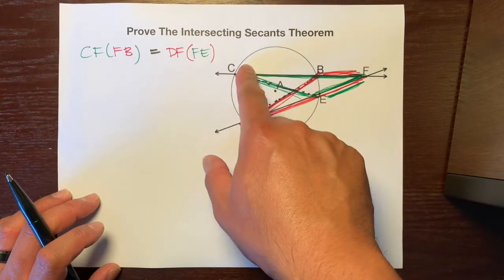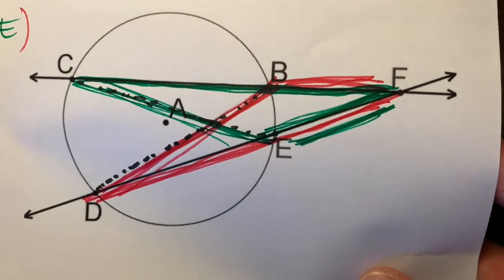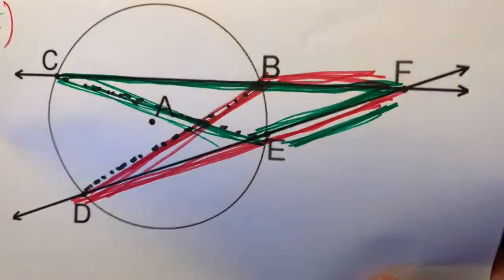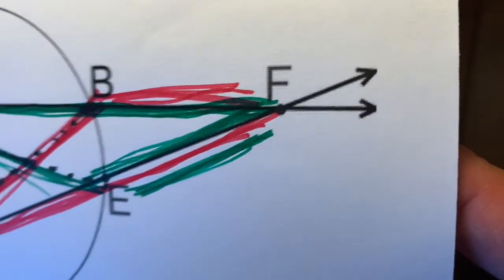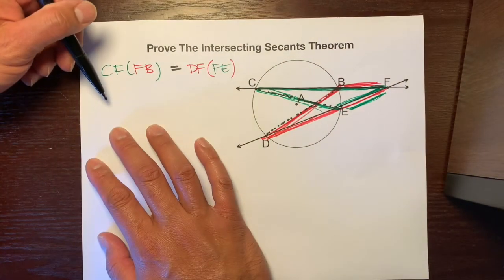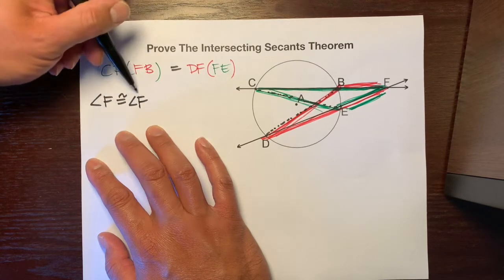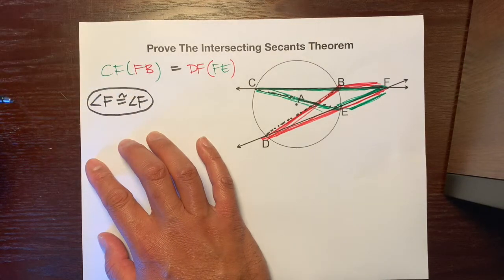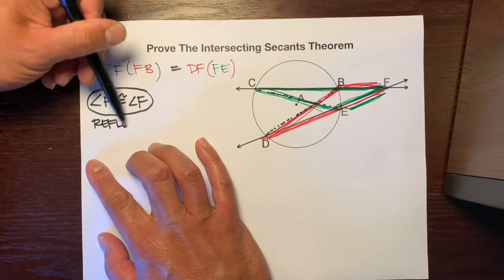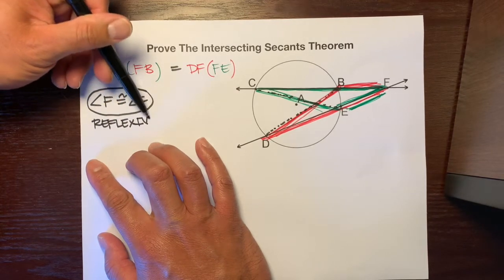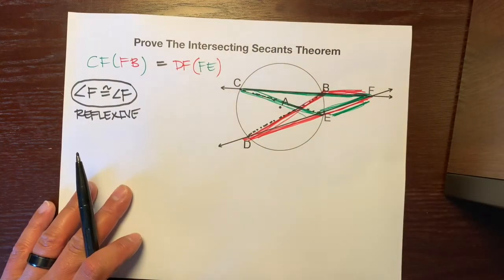Look at the triangles closely — do they share an angle in common? Yes, they both have angle F. So in our first flow chart bubble we can say: angle F is congruent to angle F. The reason is the reflexive property — you're congruent to your own reflection. Both triangles share angle F.